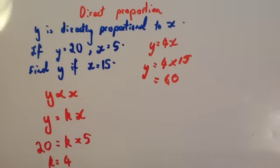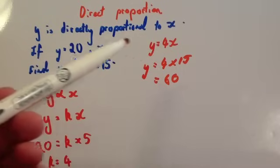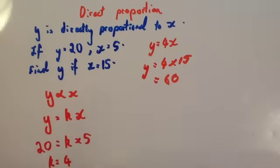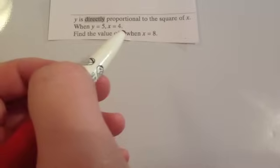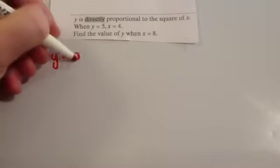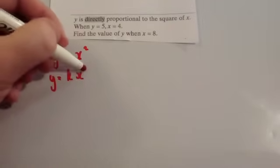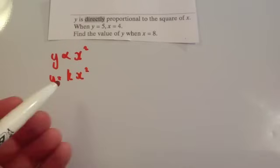In questions it's not always proportional to X — it's sometimes proportional to X squared, the square root of X, X cubed, and so on. So let's look at one of those. Y is directly proportional to the square of X. When Y equals 5, X equals 4. Find the value of Y when X equals 8. Start with: Y is proportional to X squared, then replace the proportional sign to get Y equals K times X squared.